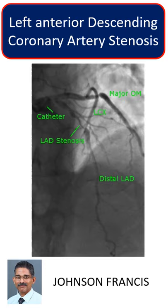The obtuse marginal is a good-sized vessel with a proximal discrete stenosis. The left circumflex, beyond the origin of the major OM, is a small vessel.